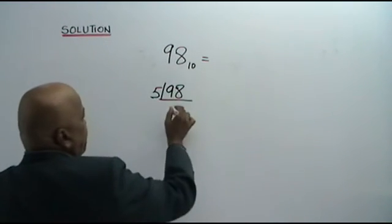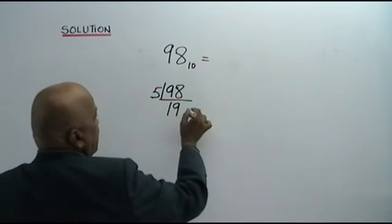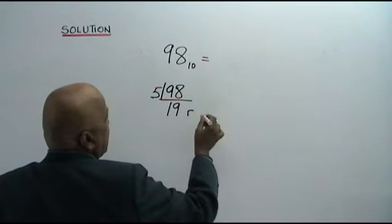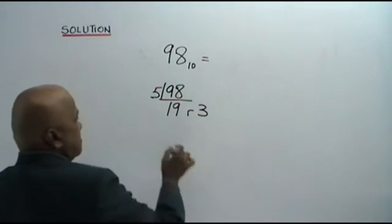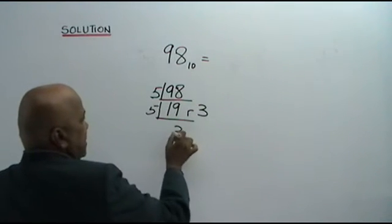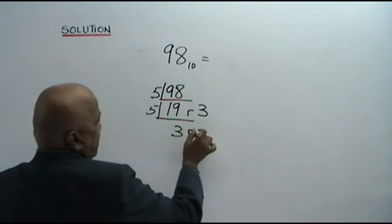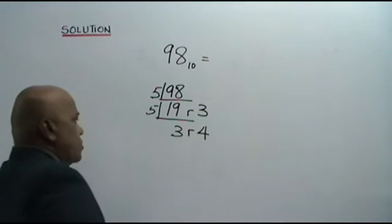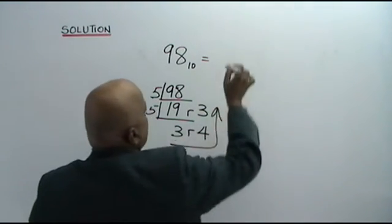98 divided by 5 is 19. And what is the remainder? Remainder is 3. Divide by 5 again. What do you get? 3. 3 times 5 is 15. Remainder is 4. So, this is your answer.